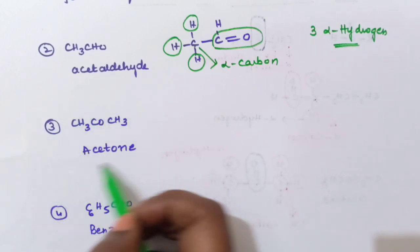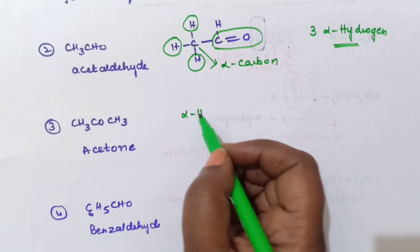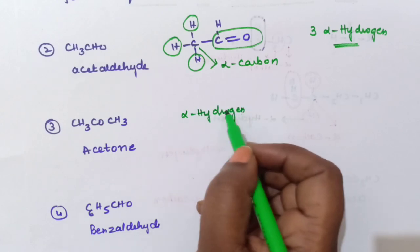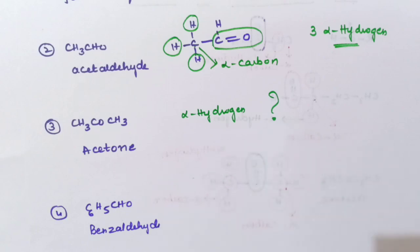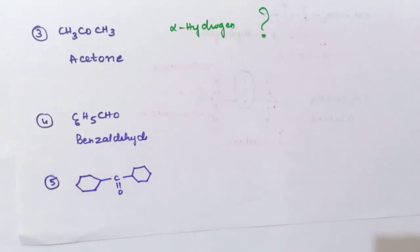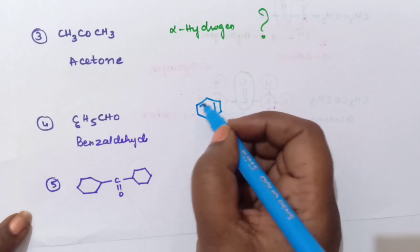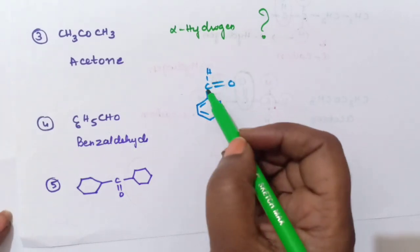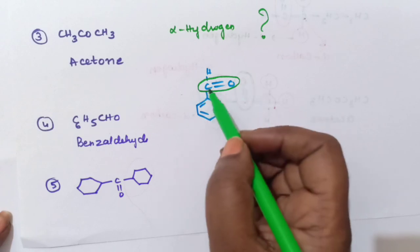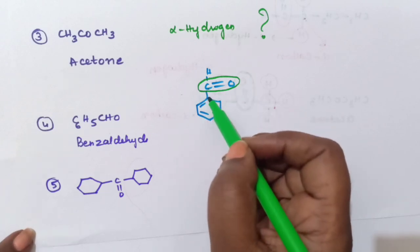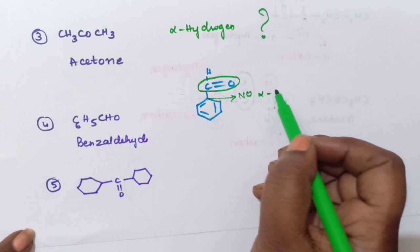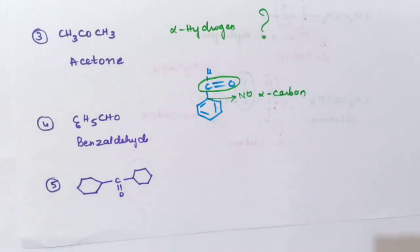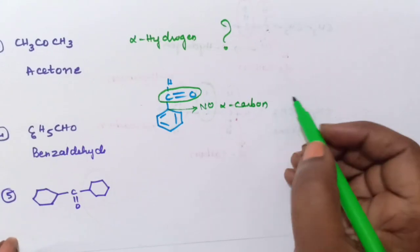Next is acetone — I want you to try this. Find the number of alpha hydrogen atoms and write your answer in the comment section. Next we will see benzaldehyde. In benzaldehyde the structure has a benzene ring with CHO attached. Here this is the carbonyl carbon. The carbon of the benzene ring attached to it — this carbon atom is not an alpha carbon. No alpha carbon.